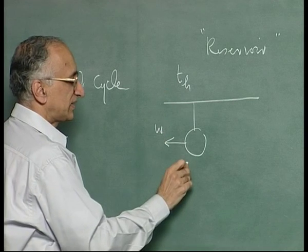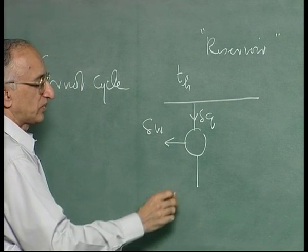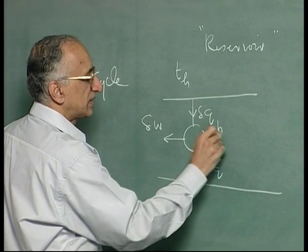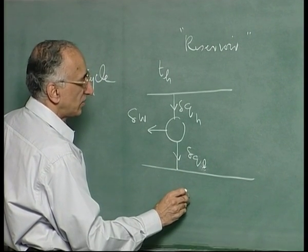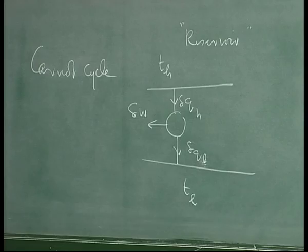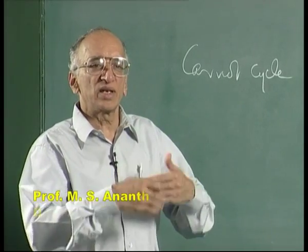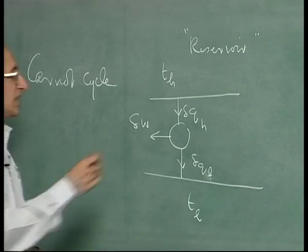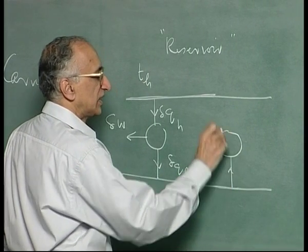You talk of a machine that takes heat delta Q and does an amount of work delta W and rejects heat delta Q_H to a sink at a lower temperature. Both the sink and the source are reservoirs. Carnot argued that any useful engine has to work in a cycle, because it will have to come back to the same state and repeat cyclical changes to get a reasonable amount of work. If it is a one-shot affair, it is no use. He introduced the concept of a reversible engine.